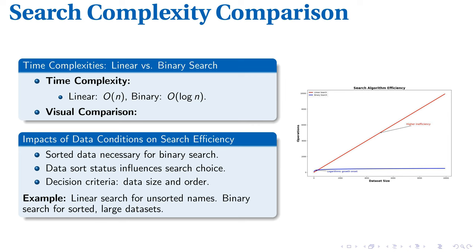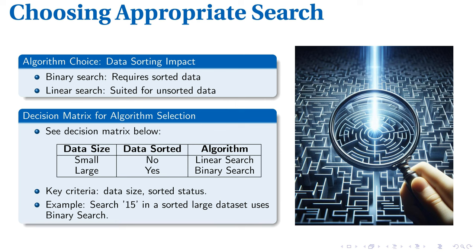Be it for small, unordered data or large, sorted equivalents, choosing the correct search algorithm is key. Selecting the right search algorithm often boils down to whether your dataset is sorted or unsorted. Take, for instance, linear search. It efficiently sifts through small, unsorted data, examining each item individually until it locates the match.